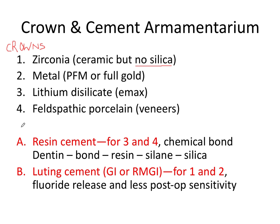We really have two viable cement options—two main cement categories. The zinc cements aren't typically used routinely today, except for zinc oxide eugenol, which is used as a temporary cement. So our two categories of cement are resin and luting cements.